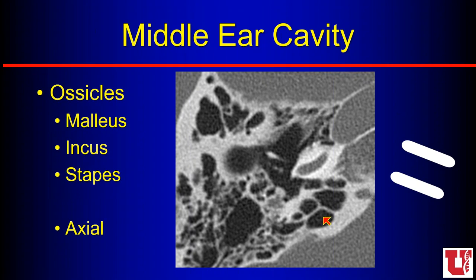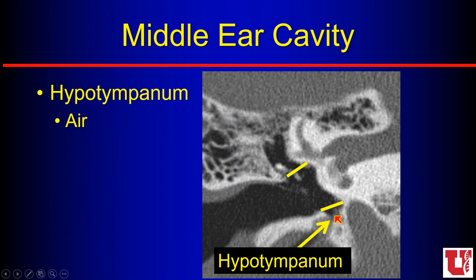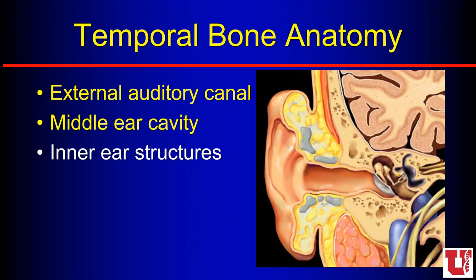Below those ossicular structures is the hypotympanum, normally just air-filled. We want to be sure there is a nice osseous bar separating the carotid and the jugular from the hypotympanum. On coronal images acquired straight in the coronal plane: under the cochlea, which starts with C, should be the carotid; and under the vestibule, which starts with V, should be a vein. We have three ossicles, at least four suspensory ligaments, and two muscles holding the ossicles in place.